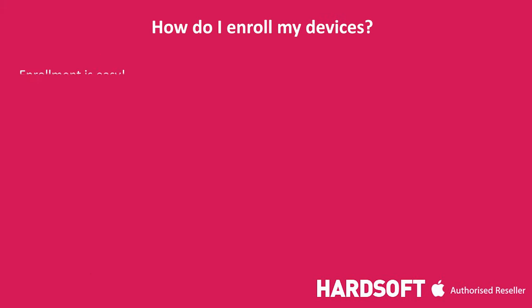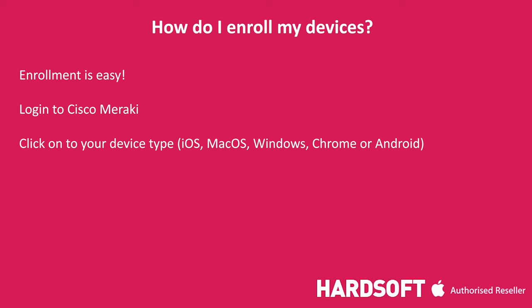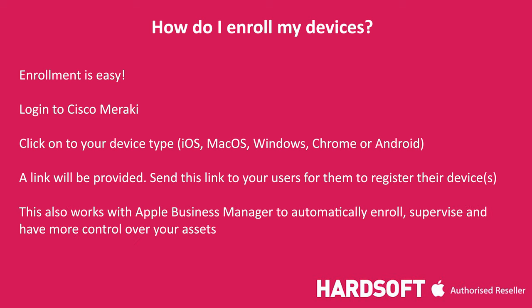Enrollment is simple and easy. Once logged into Cisco Meraki, click on the device type and it will give you a URL or a website to go to. You can send this link to your users to click register and the device will then be enrolled and visible. This also works with Apple Business Manager so it can be automatically enrolled for you.